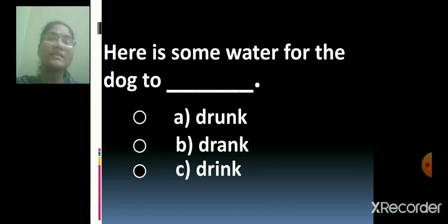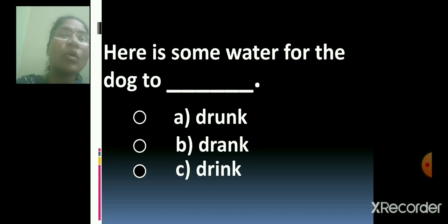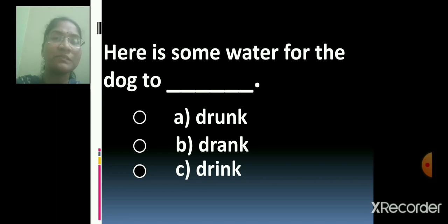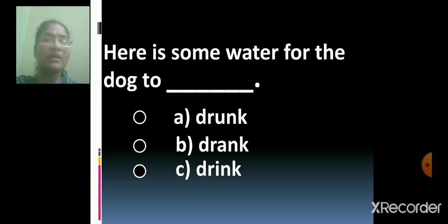Here is some water for the dog to drink. Very good. So C is the correct option. Here is some water for the dog to drink. Yes, C is the correct option.